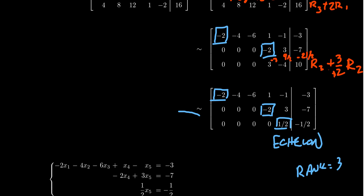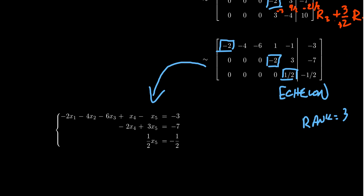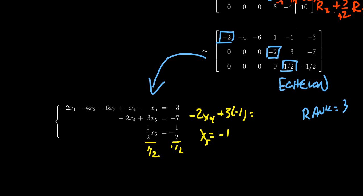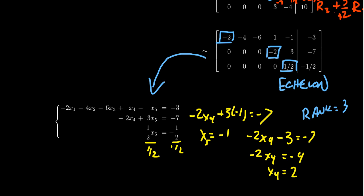Once we find echelon form, Gaussian elimination says to convert the matrix back into a system of equations and solve by back substitution. To solve for x5: divide both sides by one half, and you get x5 equals negative one. Then plug negative one into the second equation: negative 2x4 plus 3 times negative one equals negative seven. We get negative 2x4 minus 3 equals negative seven; add 3 to both sides to get negative 2x4 equals negative four; divide by negative two to get x4 equals positive two.